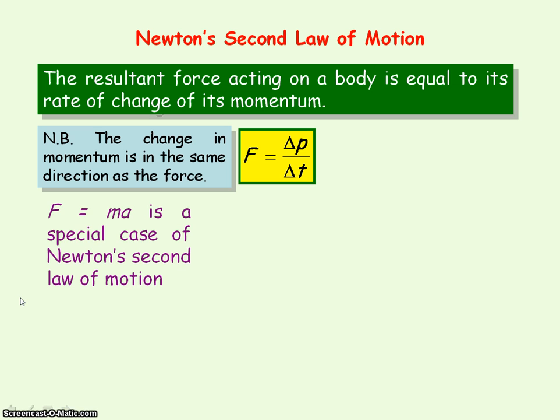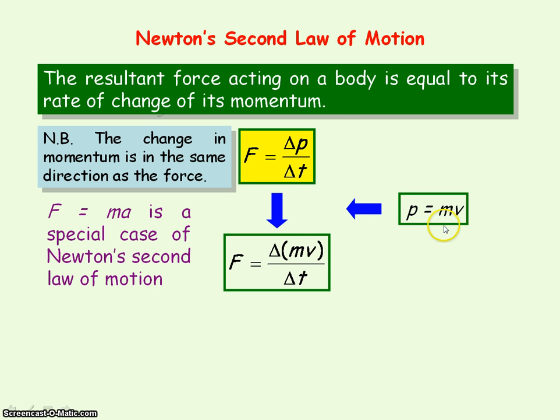F equals ma is a special case of Newton's second law of motion and we'll see how. So from the definition of momentum, it equals mass times velocity. So if we substitute that for momentum p into the equation for resultant force, we can say then the resultant force equals the change in mv divided by the time taken.